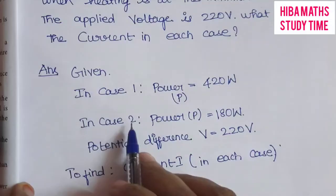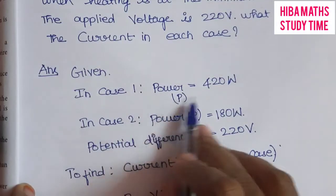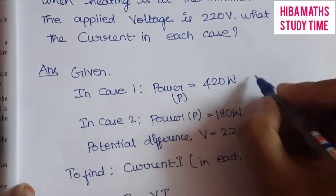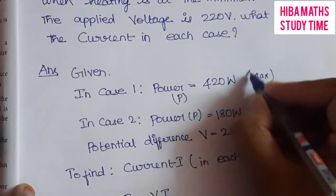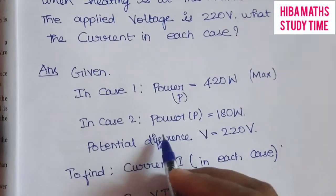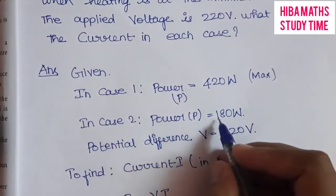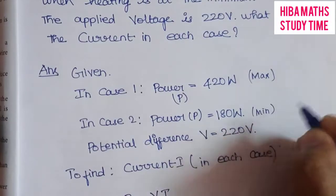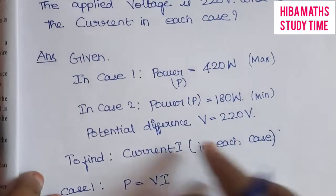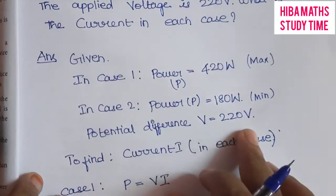Given: Case 1, power is 420 watts, that is maximum power. Case 2, power P is 180 watts, this is minimum heat. The potential difference, voltage V, is 220 volts.